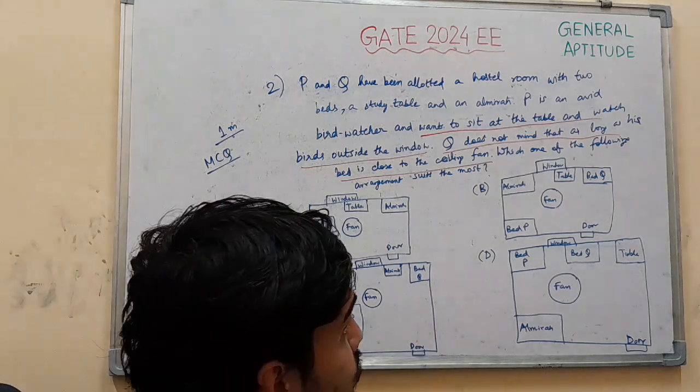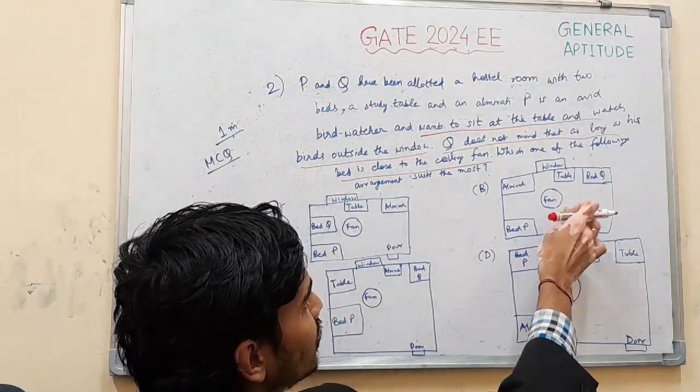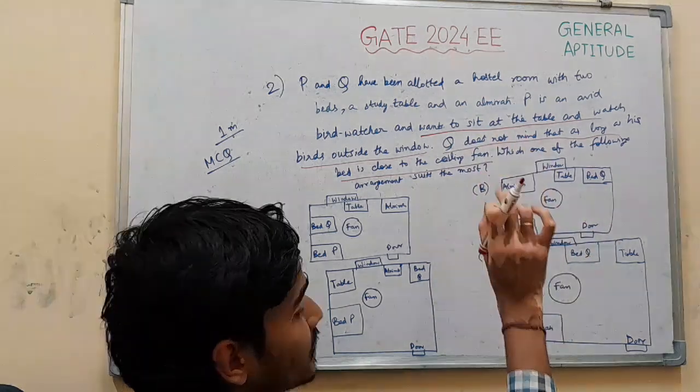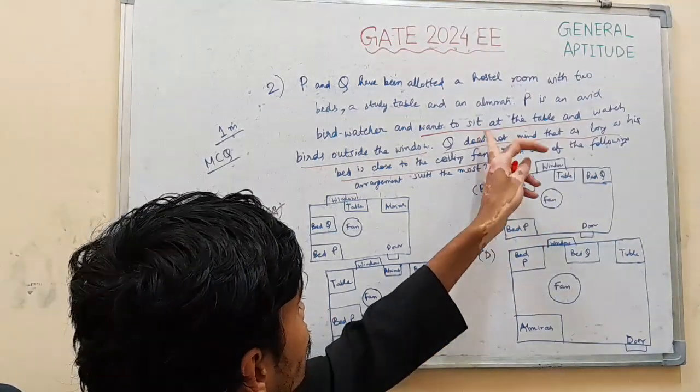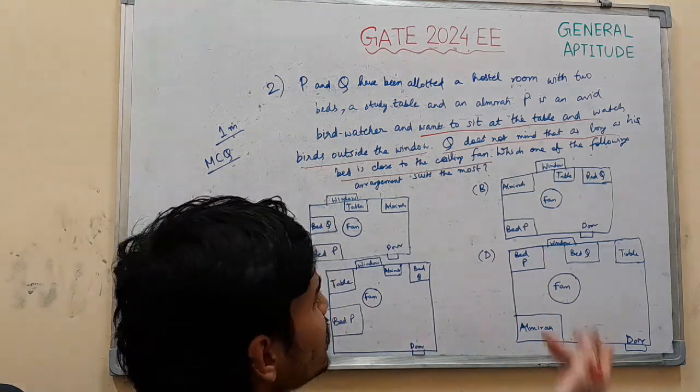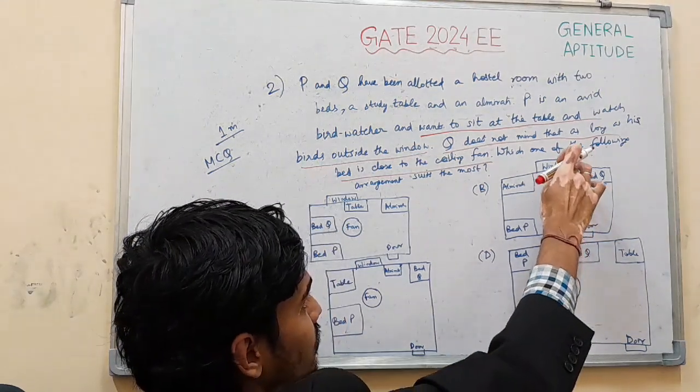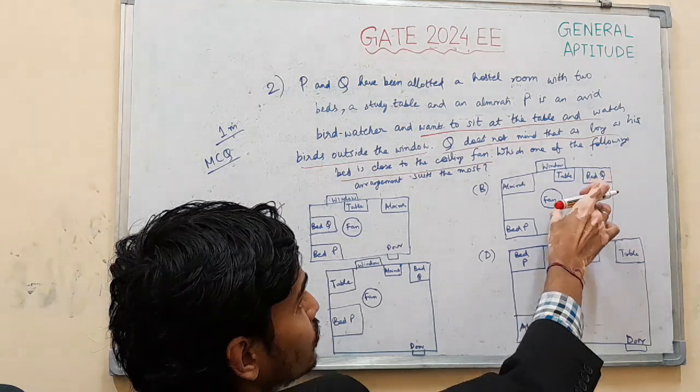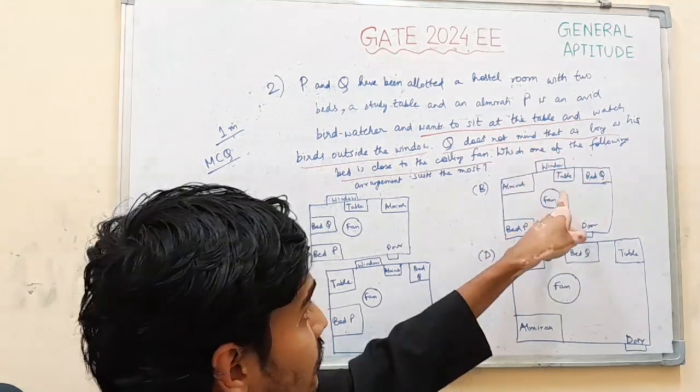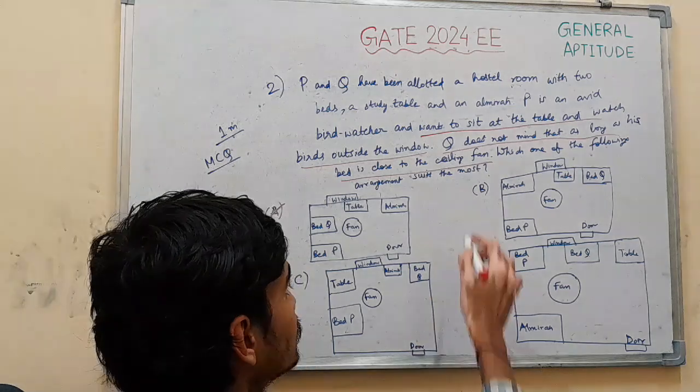Let's look at other options also. In this, the bed of Q is far from the fan. So second criterion is not satisfied. First criterion is also not satisfied. It is satisfied because table is close to the window, but bed of Q is far from the ceiling. So this is not satisfied.